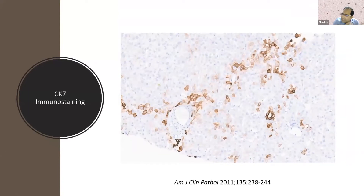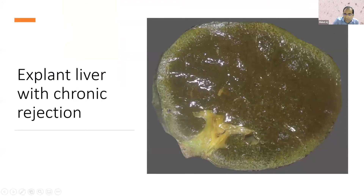CK7 immunostaining can be used as an adjunct — if you do this stain, you can confirm the duct loss. You can see the arteriole and vein with no duct, and periportal metaplasia of the hepatocytes expressing CK7 immunostaining, which is a metaplastic response. Another feature is obliterative arteriopathy — you don't see it on needle biopsies because it affects medium and large arteries.